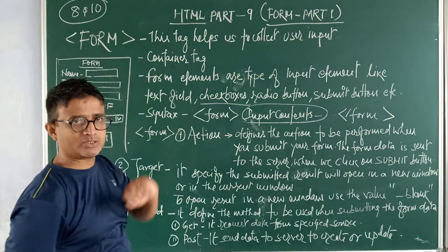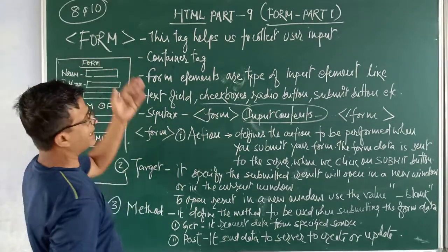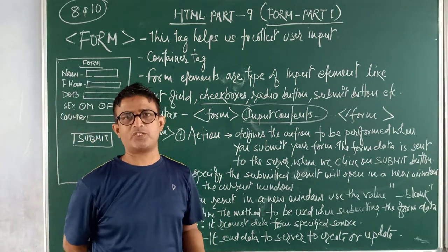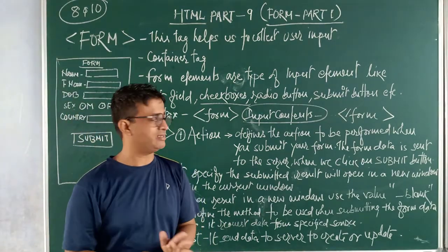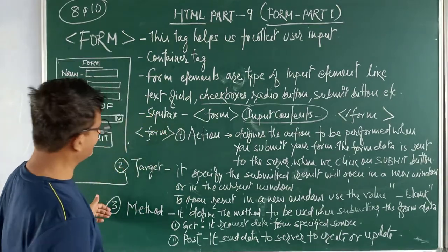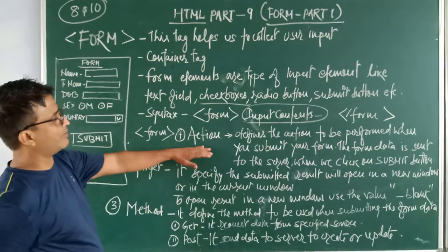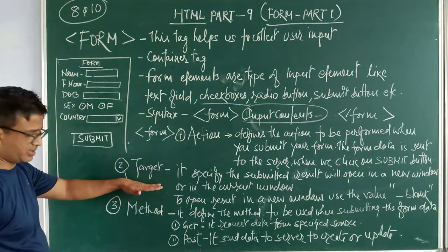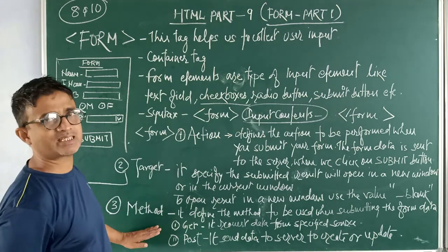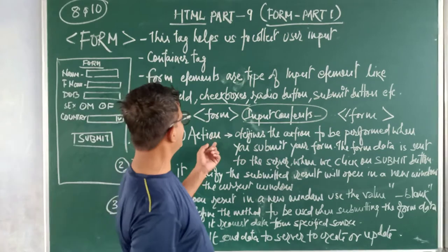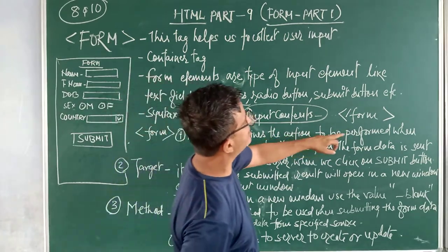You will put here how to put I will tell you in the other part of the video. Right now, form tag is over. Now what are the attributes which helps form tag to transfer the data from one place to another place or to store it in a particular server? So there are forms having three attributes: number one action attribute, number two target attribute, number three is method attribute.